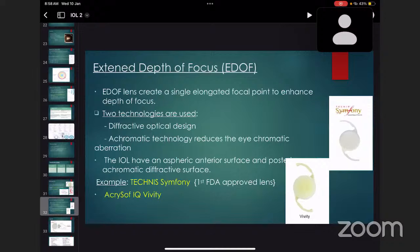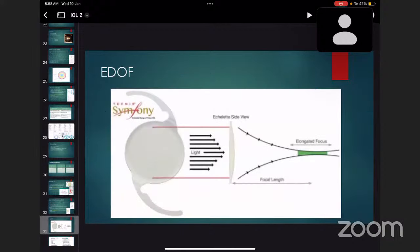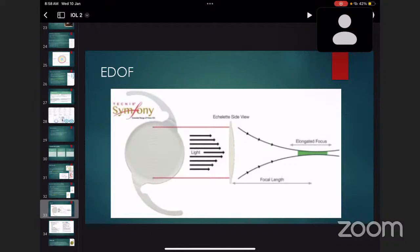Extended depth of focus: EDOF lens creates a single elongated focal point to enhance depth of focus. It uses two technologies: diffractive optical design and achromatic technology which reduces chromatic aberrations. This IOL has an aspheric anterior surface and posterior achromatic diffractive surface. Examples are Tecnis Symphony, which is the first FDA-approved lens, and AcrySof IQ Vivity. It uses the principle of diffraction which causes elongated focus and results in intermediate vision with near and far vision.